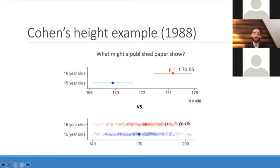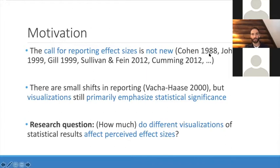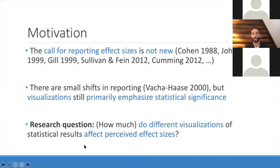The motivation is that the call for reporting effect sizes is not new — it's been going on for decades. There have been some small shifts in reporting effect sizes, but visualizations primarily emphasize statistical significance. People are sometimes putting a Cohen's D in a paper, but the figures are usually showing standard errors. The research question here is: how much do different visualizations of statistical results affect the perceived effect sizes of those results? We're going to present effect sizes and measure the effect of presenting those effect sizes — it gets a little meta.